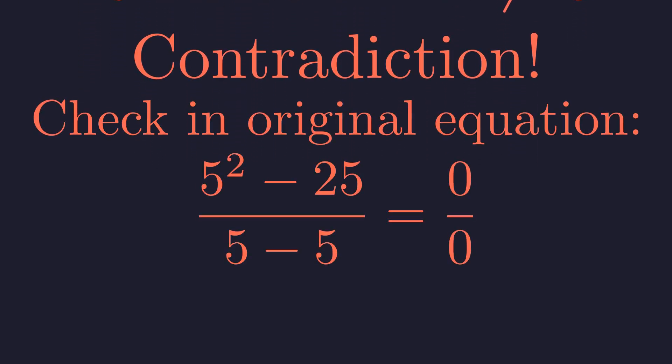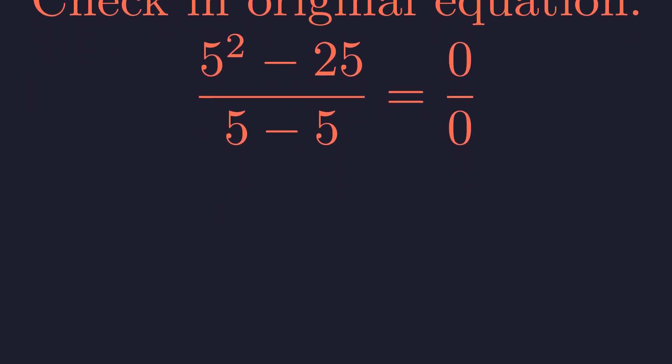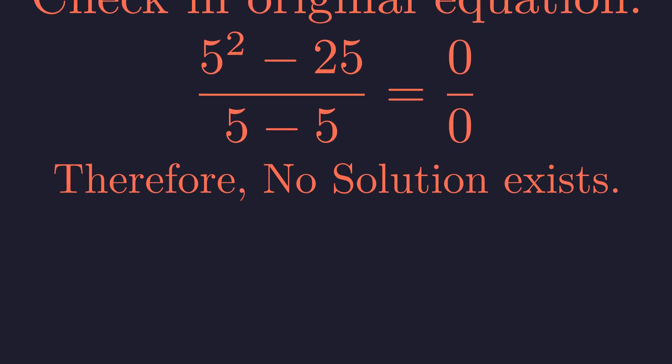If we try substituting 5 back into the original equation, we get 0 divided by 0, which is undefined. The equation literally breaks down. So despite the algebra giving us a clean answer, this equation has no solution. The apparent solution is actually an illusion.